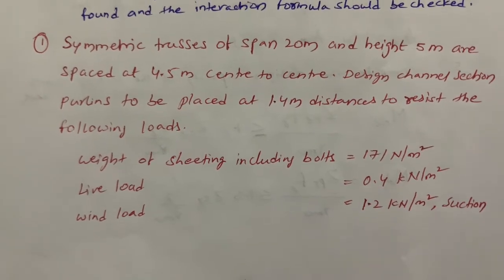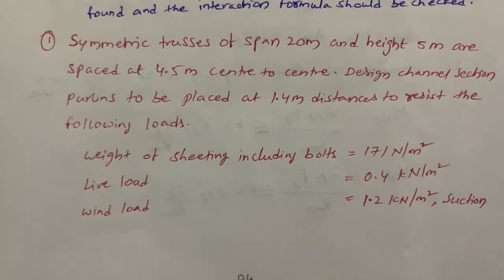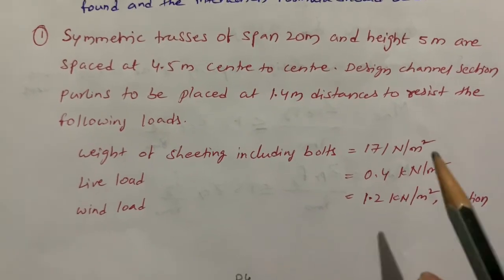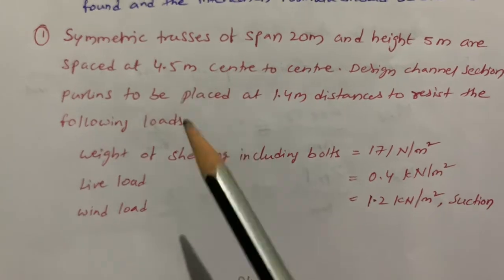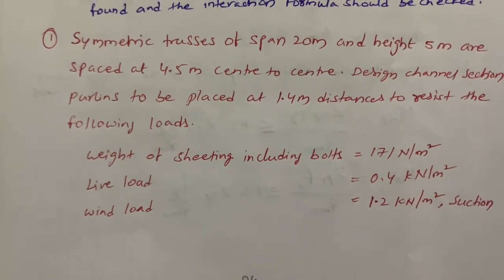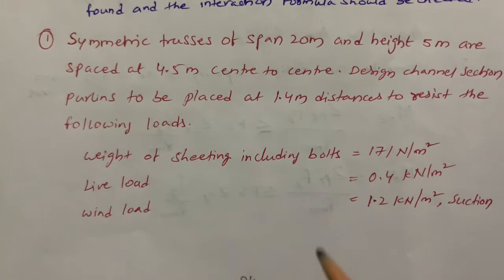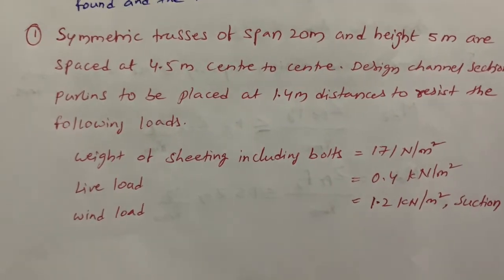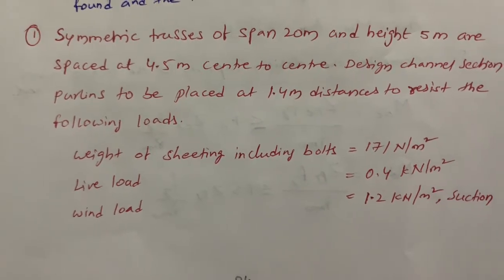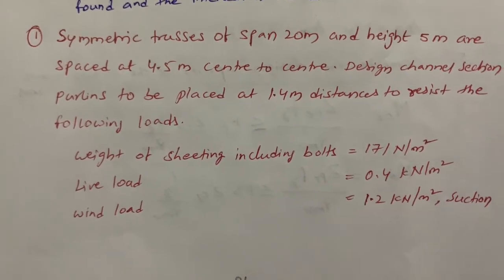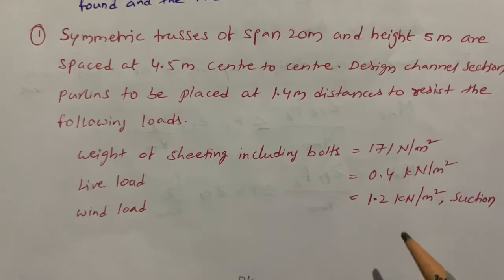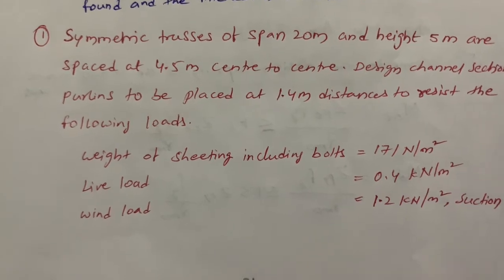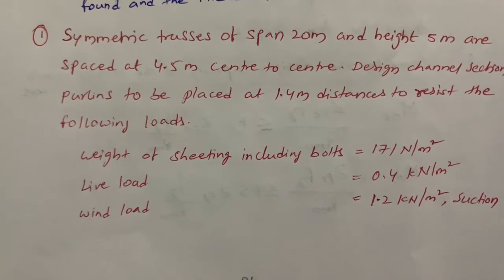Hello everyone. In this video I am going to explain about purlin design in design of steel structures. This is one example problem: a symmetric truss of span 20 meters, height 5 meters, spaced at 4.5 meters center to center. We need to design a channel section purlin to be placed at 1.4 meter distance to resist the loads — weight of sheeting including bolts, live load, and wind load.